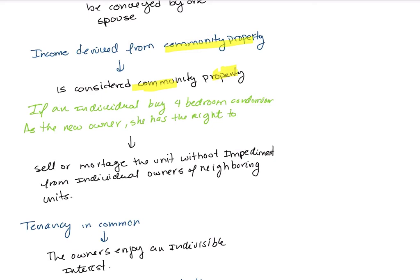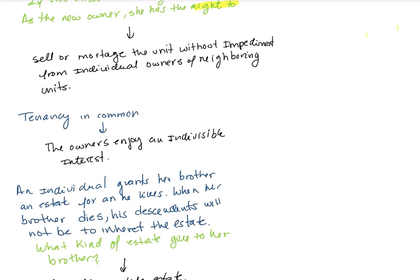If an individual buys a four-bedroom condominium as the new owner, she has the right to sell or mortgage the unit without impediment from the neighboring unit owners. When you buy a condominium, you make the decisions for your unit — no one from the neighboring units can interfere. Tenancy in common gives owners indivisible interest.